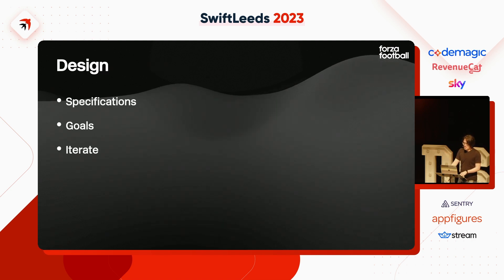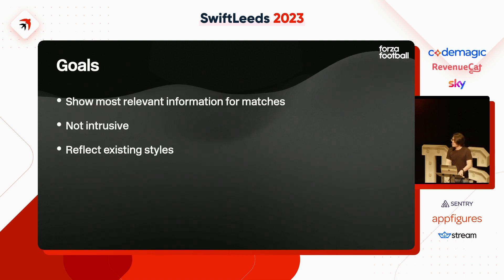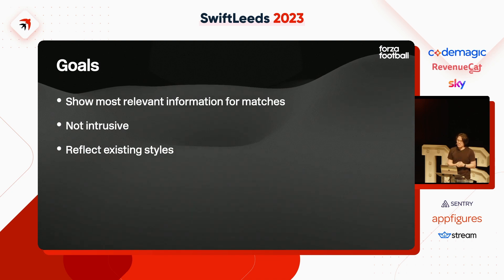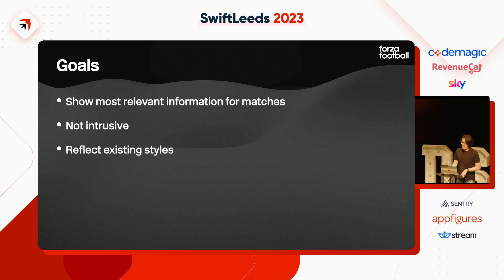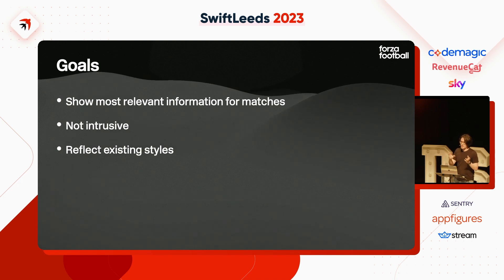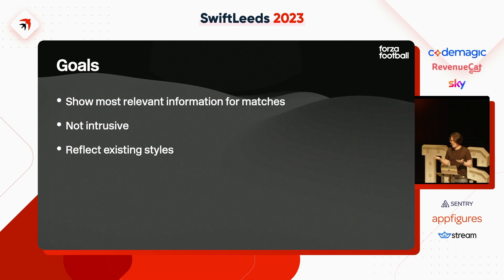Done with specifications — now the goals. We want to show the most relevant information for matches, especially live matches. Secondly, we don't want to be intrusive, since we appear on the user's screen and users have very strong preferences about how their home or lock screen looks. We want to provide information without being like a pop-up ad. Thirdly, we want to reflect existing styles from the app — we want users to recognize Forza Football without slapping a logo everywhere, just through familiar interface designs.